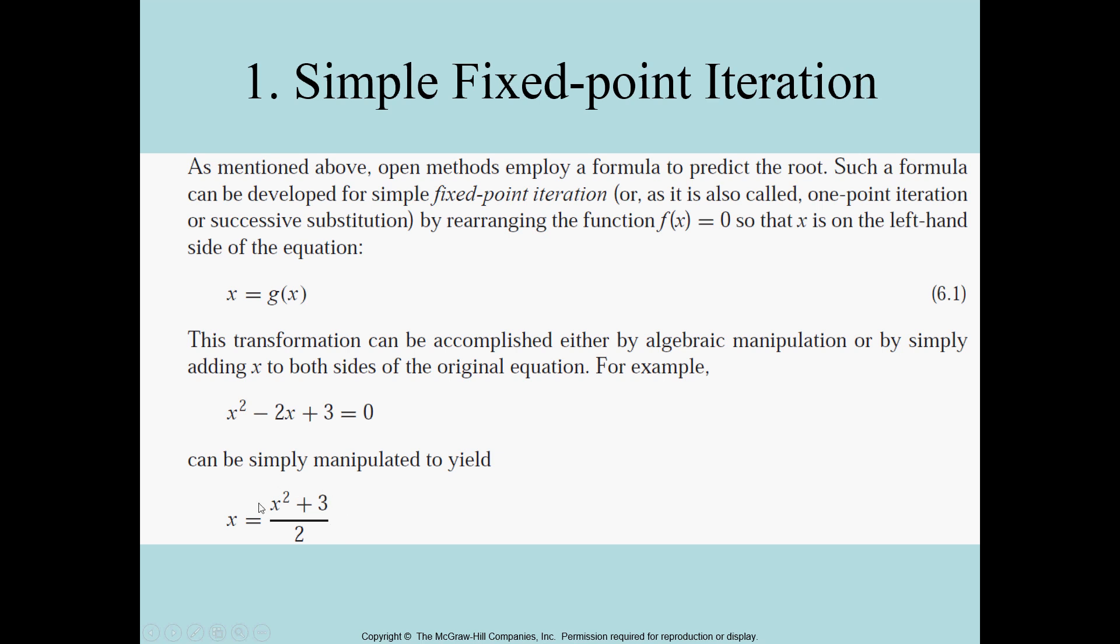We will call this function G of x. We will assume some random value of x and see what is the left-hand side versus the assumed value and the answer. For example, if we assume x equals 1 and put it in this equation, we will get the answer equal to 2, which means there's a 50% approximate error.